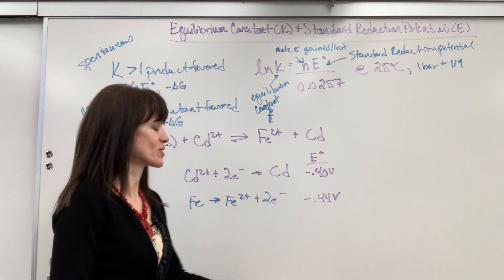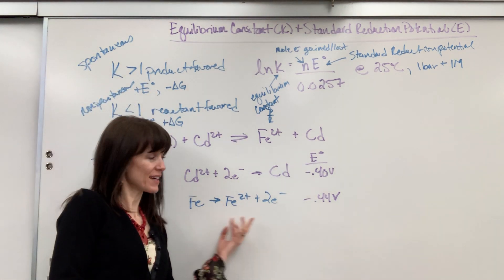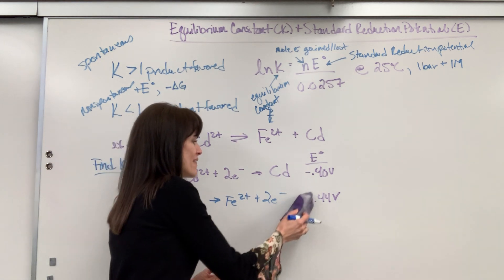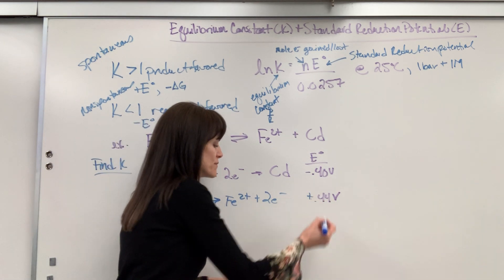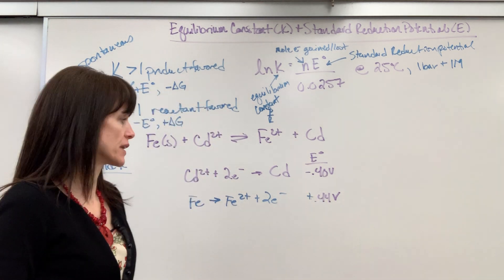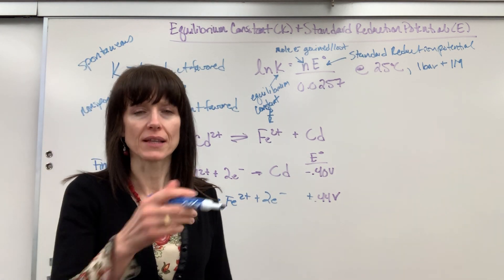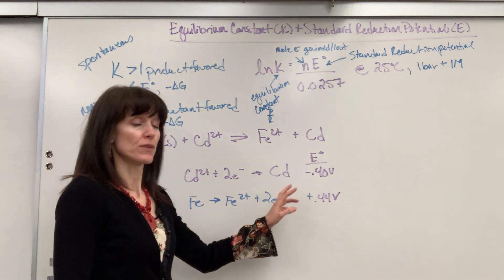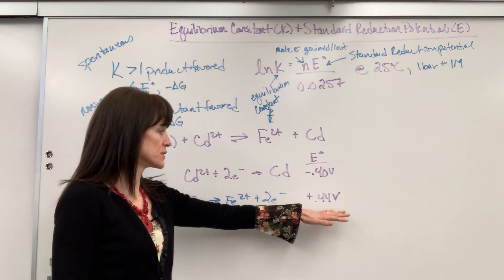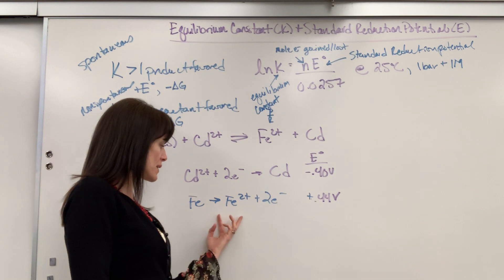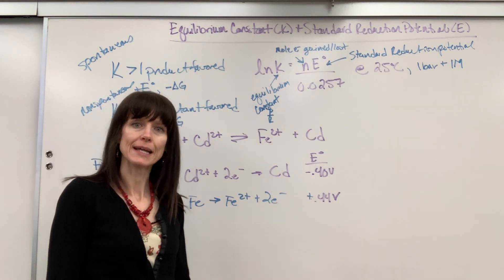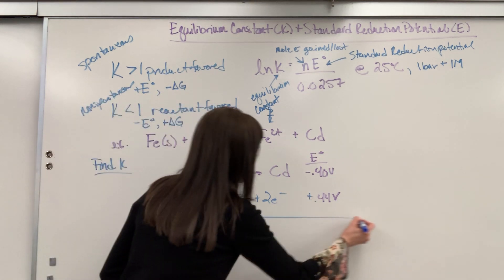I forgot something really important. When I flip this half reaction, what do I do to the sign? That becomes a positive. You just change the sign. You'll see in textbooks they say cathode minus the anode. I think that's confusing for students. Easy way to do it for a voltaic: you flip the most negative number, and when you flip this reaction, you change that sign. Let's go ahead and add it up.